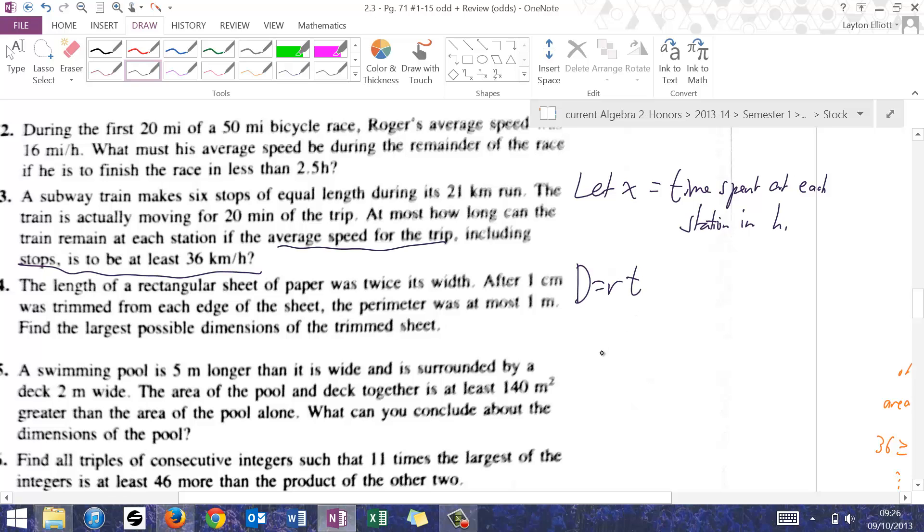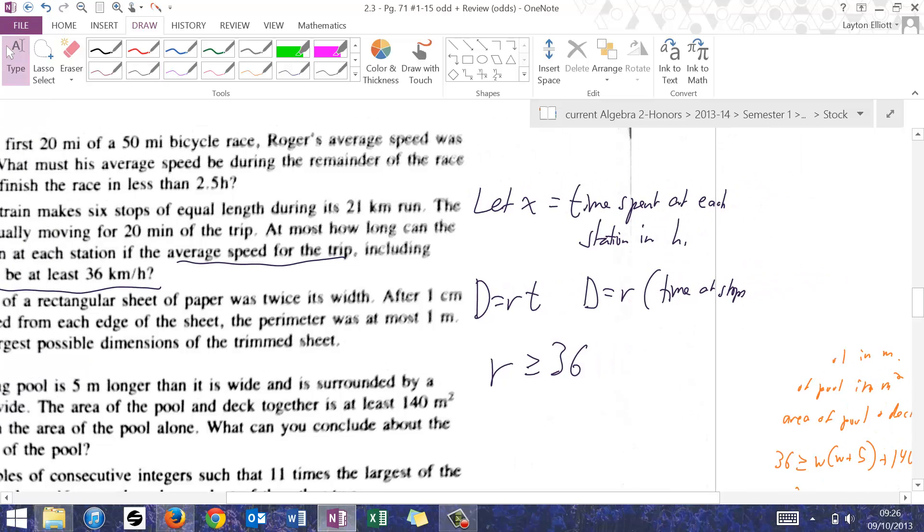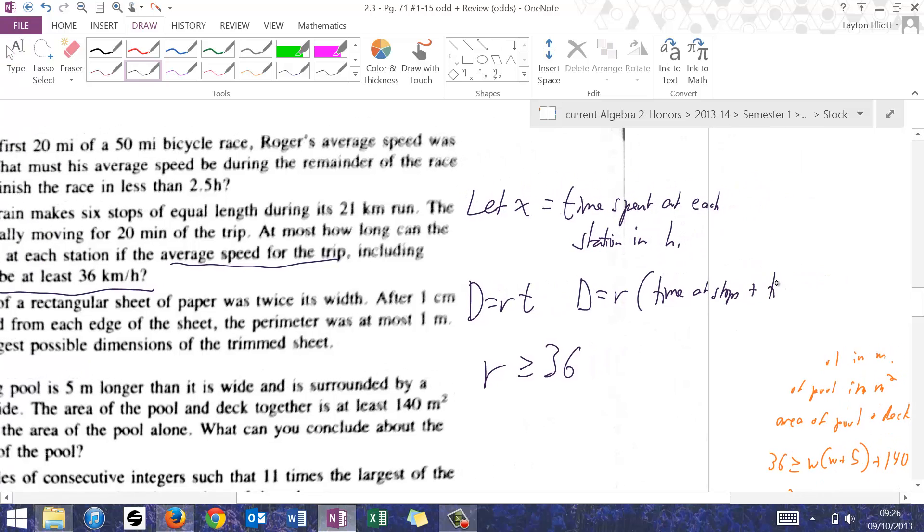We know that distance equals rate times time, but this is saying that the rate is at least, which means greater than or equal to, 36 kilometers per hour. Rate is distance divided by time, and in this case, distance equals rate times the time at the stops plus the time moving.